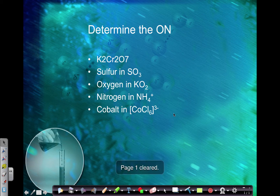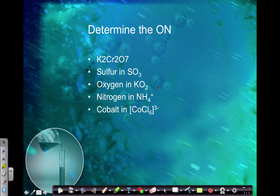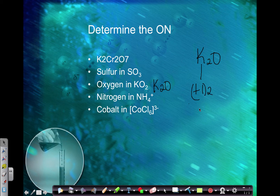I suggest that if you're watching the video and I've got more than one example, you pause, try it on your own, and then watch to see if you're right. Now, this next one actually has a typo — it's supposed to be K2O. Potassium is always in group one, so it's plus one. There are two of those, giving plus two. So oxygen here is going to be negative two to cancel that out and make the compound equal zero.